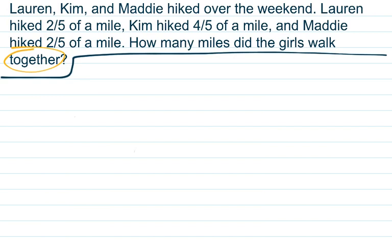So we have Lauren, who had two-fifths of a mile, plus Kim, who had four-fifths of a mile, plus Maddie, who had two-fifths of a mile.